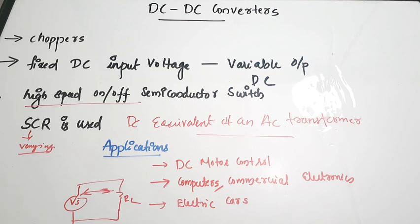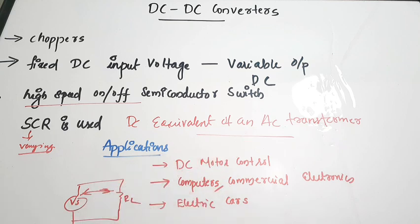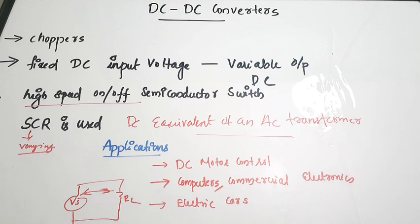Choppers have a lot of applications, especially for DC motor control, computer power supplies, commercial electronics devices, and electric cars. In all these areas, choppers or DC to DC converters are being used. Next we are going to see the circuit diagram of a basic chopper and with the help of that circuit diagram we will see how the chopper works and how the SCR is connected.